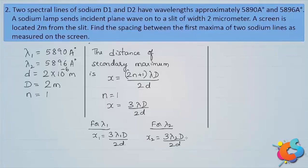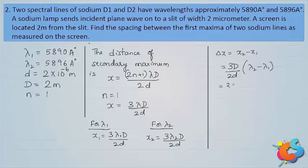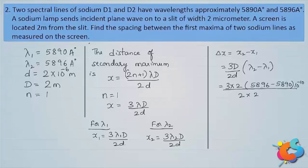The separation between the two bands is Δx = x₂ − x₁ = (3D/2d)(λ₂ − λ₁). Substituting values: D = 2 m, λ₂ − λ₁ = 5896 − 5890 = 6 Å = 6×10⁻¹⁰ m, and d = 2×10⁻⁶ m. The factor of 2 in the numerator and denominator cancels.